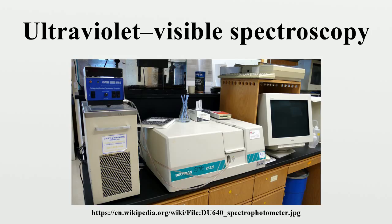UV-Vis spectroscopy is routinely used in analytical chemistry for the quantitative determination of different analytes, such as transition metal ions, highly conjugated organic compounds, and biological macromolecules. Spectroscopic analysis is commonly carried out in solutions, but solids and gases may also be studied.